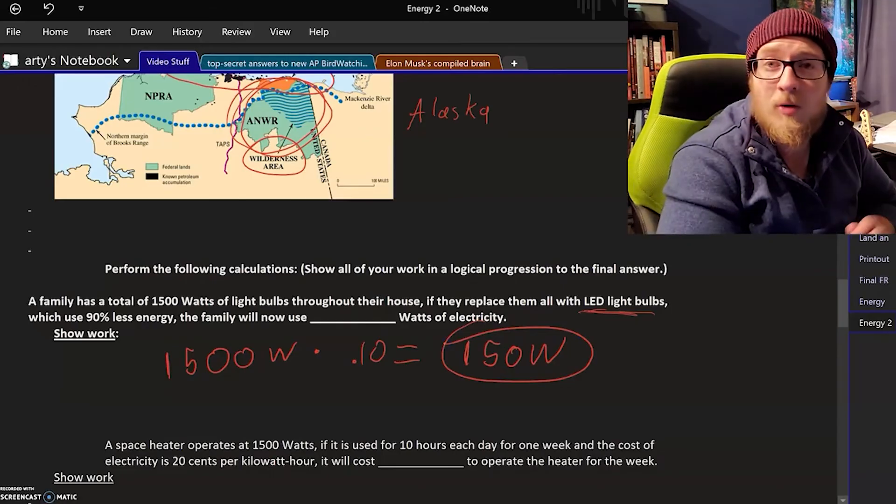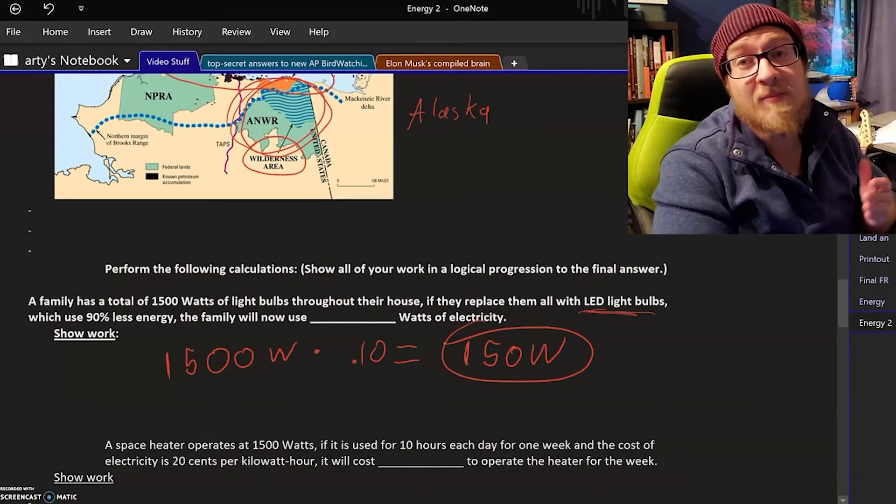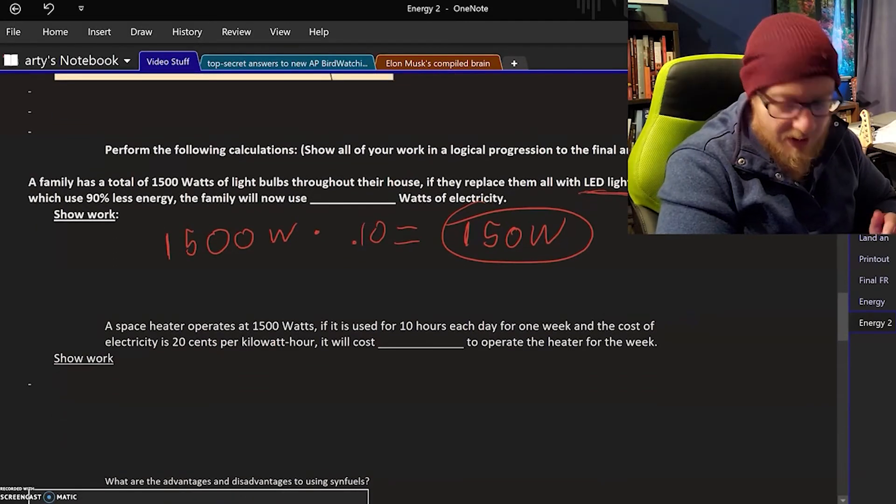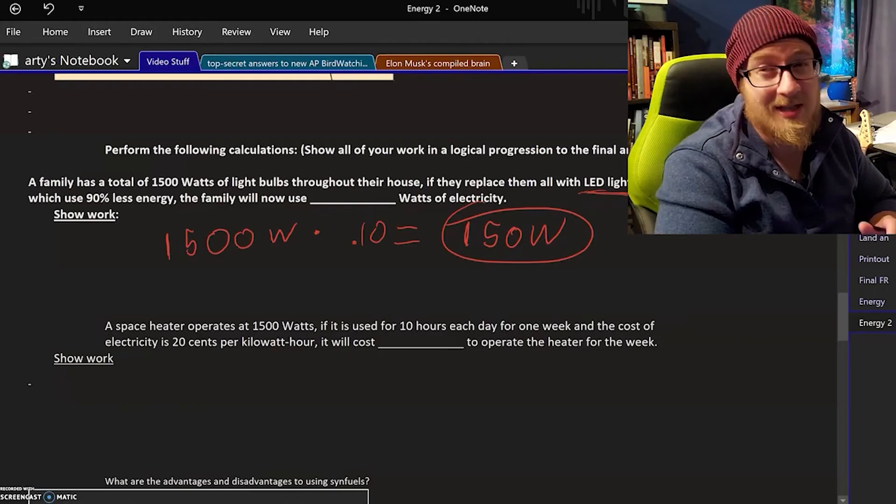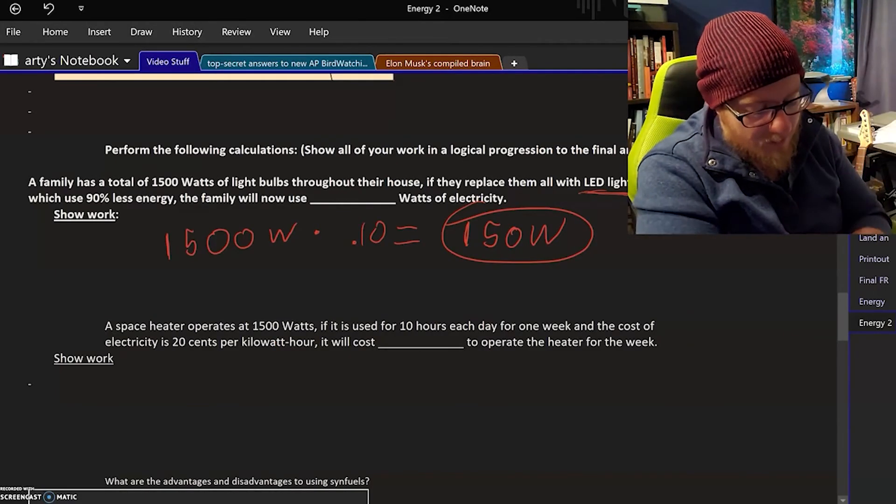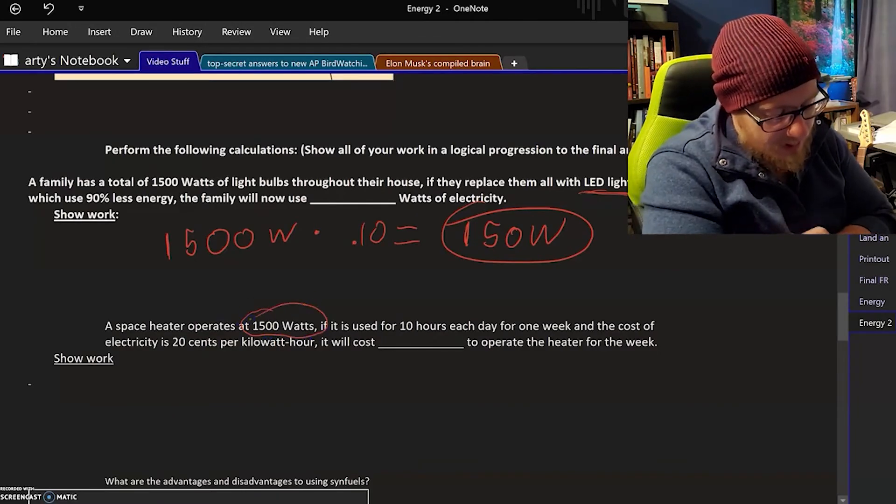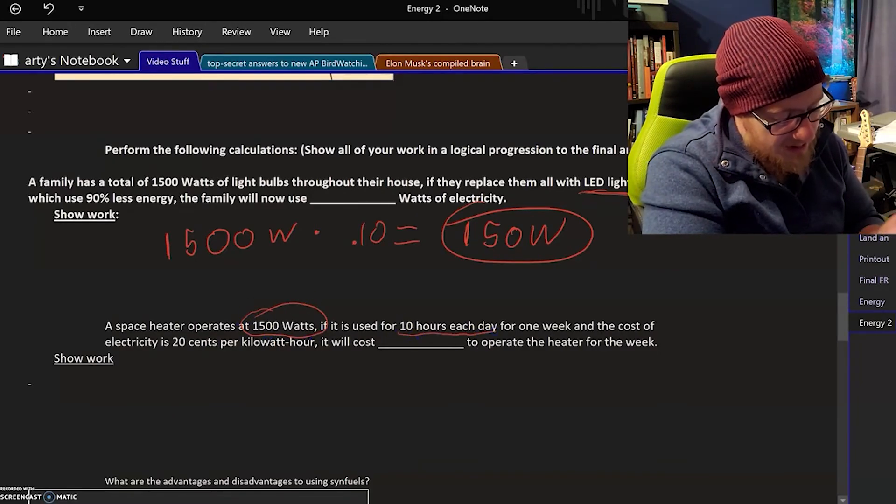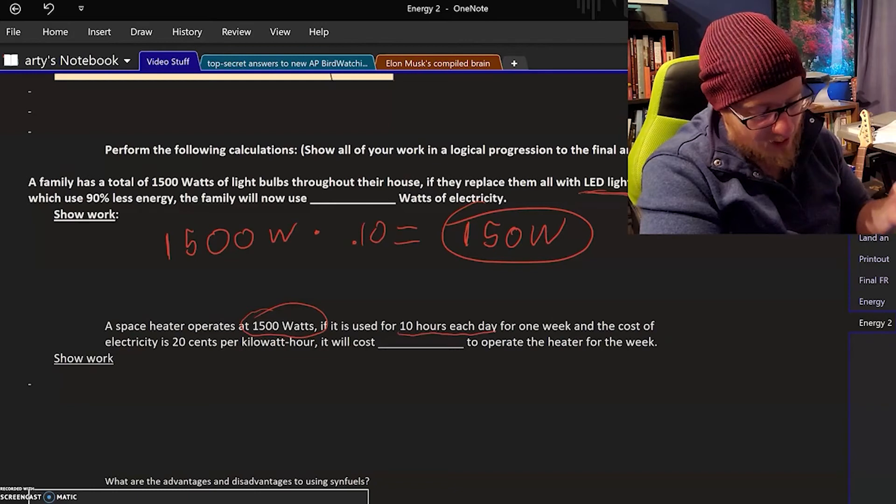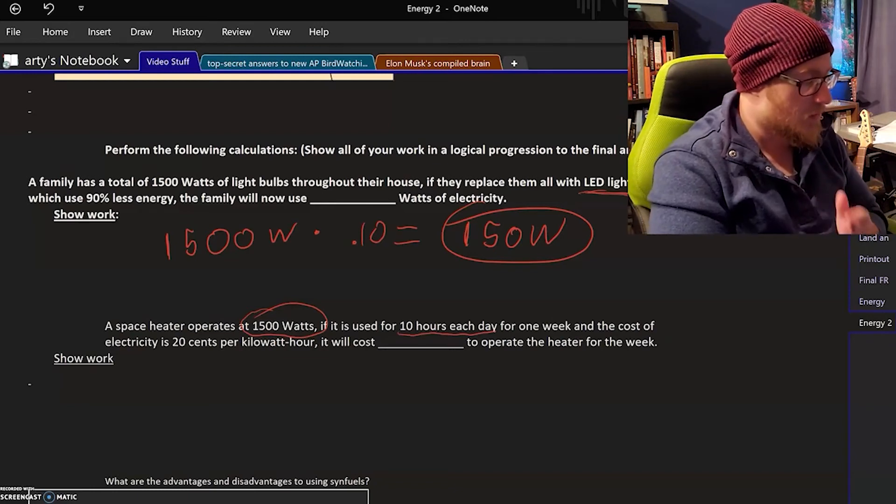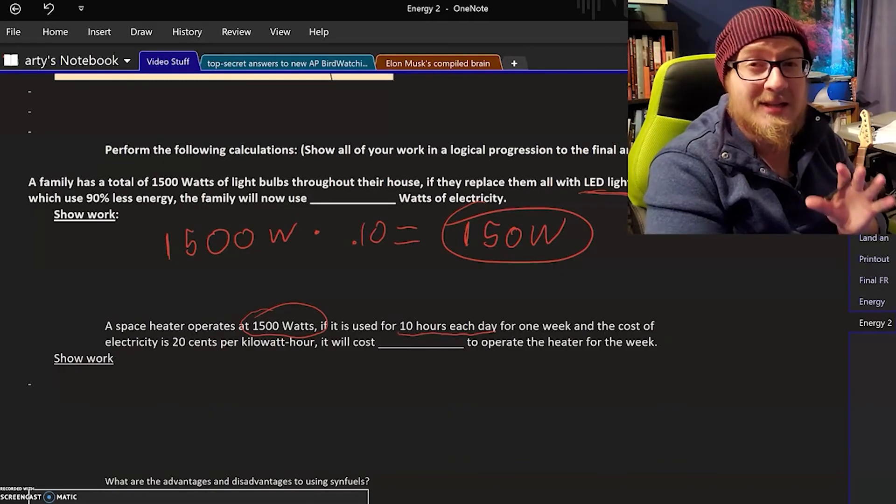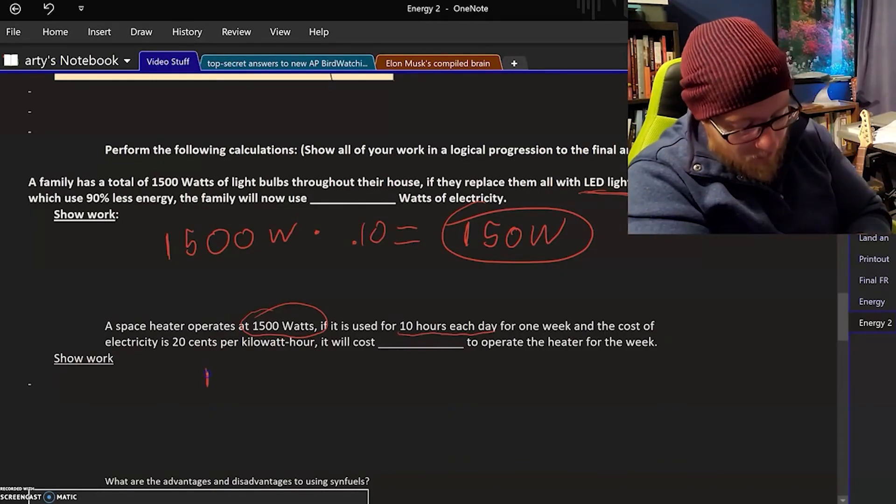Now let's look at space heaters. Space heaters are very energy inefficient - they actually use a lot of energy to create heat. So a space heater operates at 1500 watts. If it is used for 10 hours each day for one week and the cost of electricity is 20 cents per kilowatt hour, it will cost how much to operate the heater for a week?